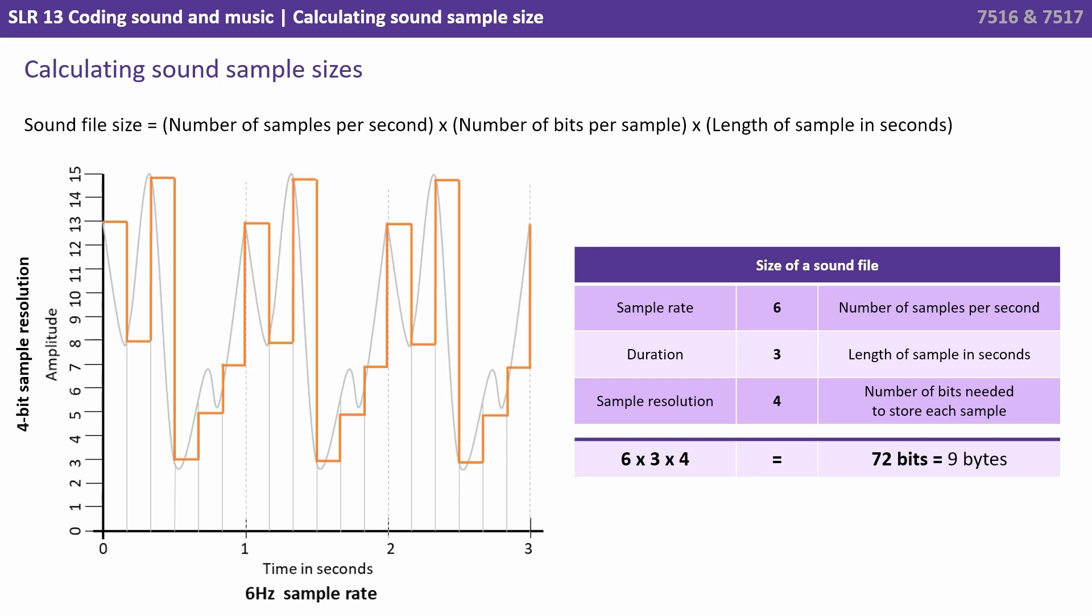So here we see an example of a digital sound wave that was captured from an analogue. We have a sample rate of 6, so that's the number of samples being captured in each second.